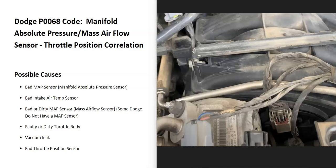The most common cause of a Dodge with the P0068 code is a bad manifold absolute pressure sensor. While it's not the only cause, this sensor going bad and needing replacement is very common. You can test it — there are good YouTube videos on that — but the first thing to check is that MAP sensor.